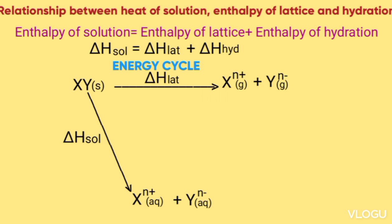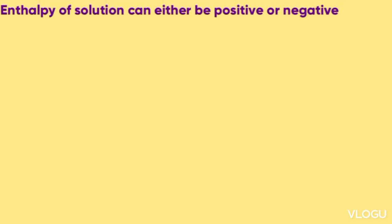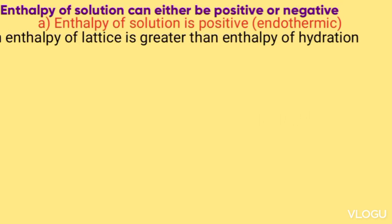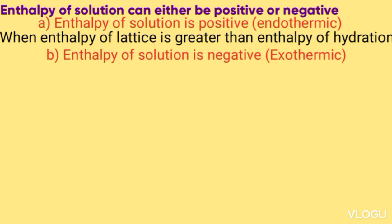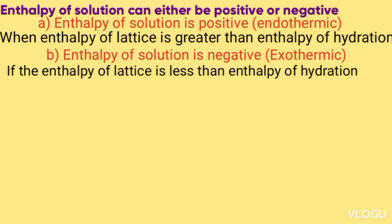Then X⁺ (gas) becomes hydrated by addition of water to form X⁺ (aqueous), and Y⁻ (gas) forms Y⁻ (aqueous). From the relationship, enthalpy of solution = enthalpy of lattice + enthalpy of hydration. The enthalpy of solution can be positive or negative. It is positive when enthalpy of lattice is greater than enthalpy of hydration, and negative when enthalpy of lattice is less than enthalpy of hydration.